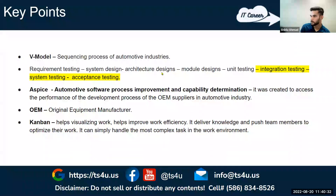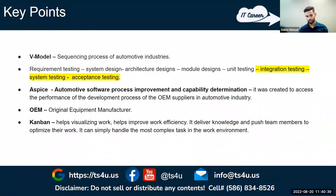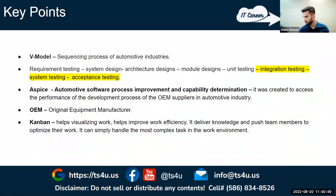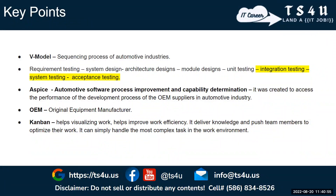The OEM owns everything but does not develop anything themselves. For example, for a 2026 model, GM wants cameras on all four sides of the vehicle and needs to build the ECU. The GM engineering team writes all the different requirements, which then go out to supplier companies.